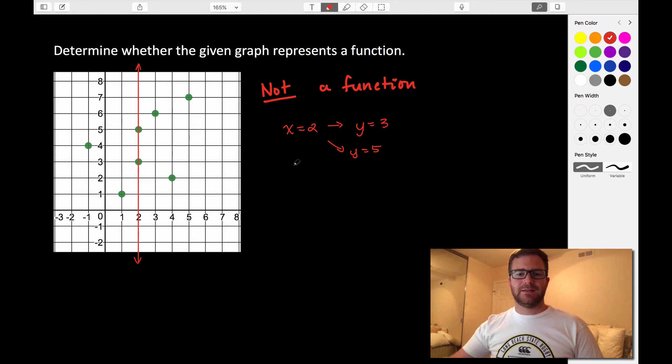So if we were writing this as ordered pairs, we'd have two ordered pairs from x equaling two: two comma three and two comma five, which we're not allowed to have in order for a graph to be a function.